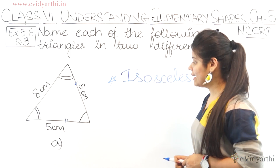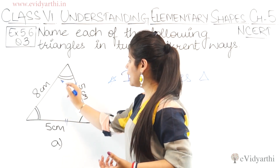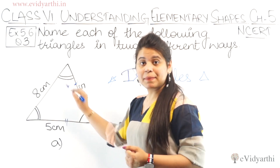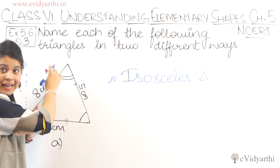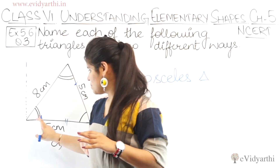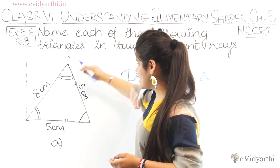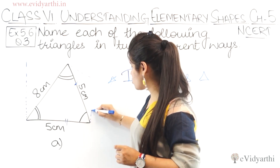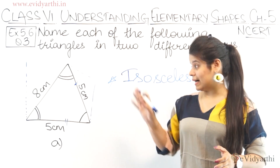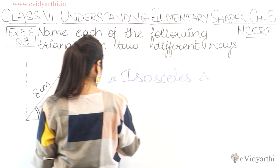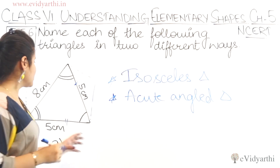Now we talk about the angles. The angles are not explicitly given, but looking at this triangle, all three angles appear to be less than 90 degrees. This means all three angles are acute. If three angles are acute, then it is an acute angled triangle. So this was the first part.